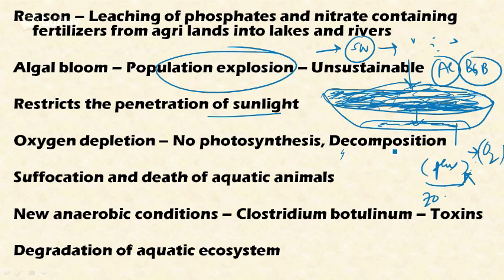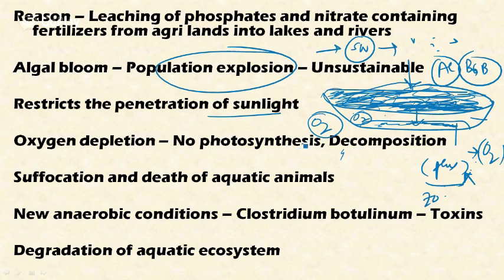After the algal blooms die, they sink to the bottom of the water body and undergo decomposition. Decomposition requires oxygen, and microorganisms like bacteria, fungi, and saprophytes utilize the oxygen present in the water to decompose the dead algal matter. This consumes a significant amount of oxygen, resulting in less oxygen being available for other organisms including fish and other aquatic animals, causing suffocation and death.